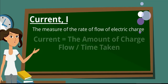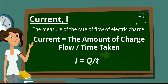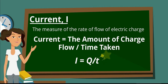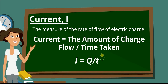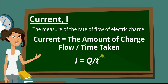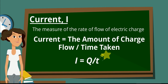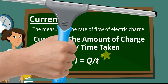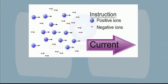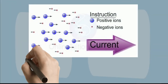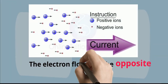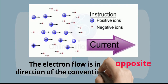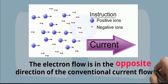An electric current is the measure of the rate of flow of electric charge through a given cross-section of a conductor. In other words, current is the measure of how fast the charge flows through a cross-section of a conductor. Current is equal to the amount of charge flow over the time taken. Conventionally, the direction of the electric current is taken to be the flow of positive charge, while electron flow is in the opposite direction of the conventional current flow.